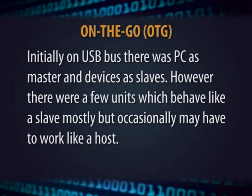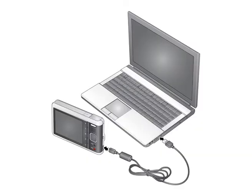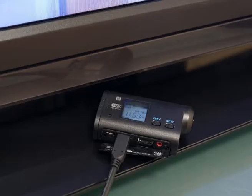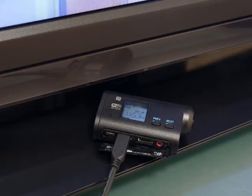On-the-Go (OTG): initially on USB bus, there was a PC as master and devices as slaves. However, some units behave like a slave mostly but occasionally work like a host. For example, a camera is normally a device to a PC but may become a host to a printer or TV to print or show stored pictures. The OTG protocol provides an arbitration mechanism allowing units to negotiate who will be host. OTG introduces an additional data pin ID that determines the initial status for host-device negotiation. OTG products may also be known as dual-role devices.